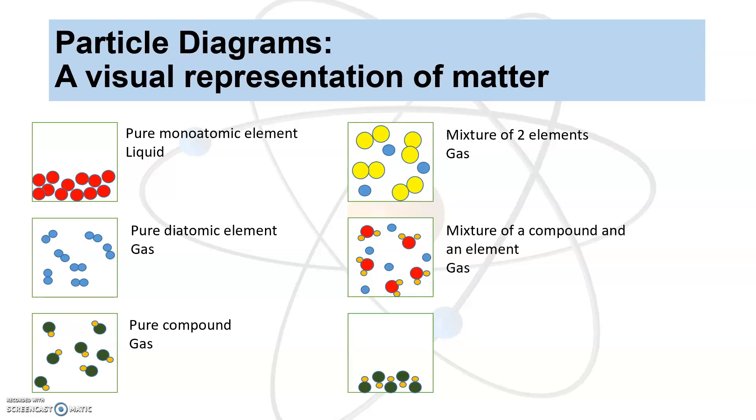And the bottom one is a compound. So we have two different colors, fixed proportion. We're at the bottom of the container, it's not a gas, it's either a liquid or a solid. And since it's a reproducible pattern, I would call that a solid. So compound, pure compound in the solid phase.